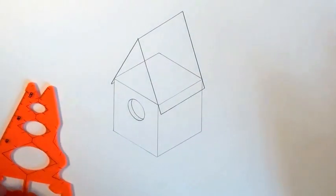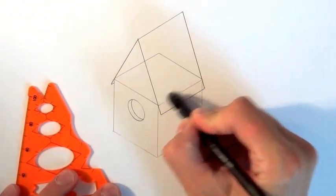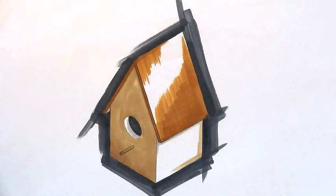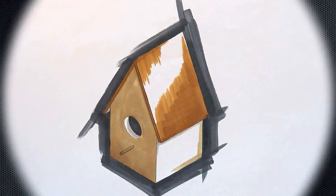So the next couple of things to do are just to rub out those construction lines, which will speed up for you. Give it a splash of colour. And there's your perfect 3D bird box.